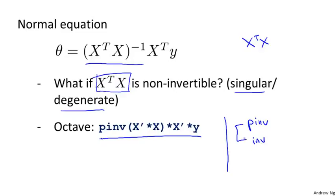And the differences between these two are somewhat technical. One's called the pseudo inverse, one's called the inverse. But you can show mathematically that so long as you use the pinv function, this will actually compute the value of theta that you want, even if X transpose X is non-invertible. The specific details between pinv and inv are somewhat advanced numerical computing concepts that I don't really want to get into.